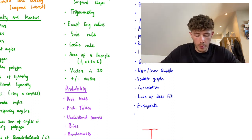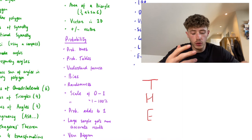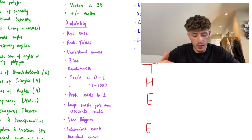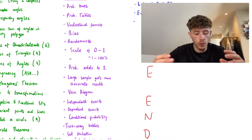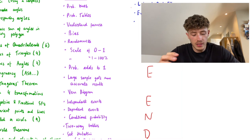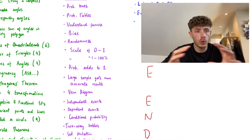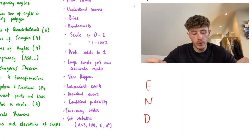Purple is probability. Probability trees and tables, understanding the concepts of fairness, bias, and randomness - what do they mean? The probabilities of a scale from 0 to 1 in decimal form, or 1 to 100% as a percentage. Probabilities adding to 1, so in a whole experiment the probability should add up to 1. Large sample gets more accurate results, so understanding different sample sizes and how they affect results.